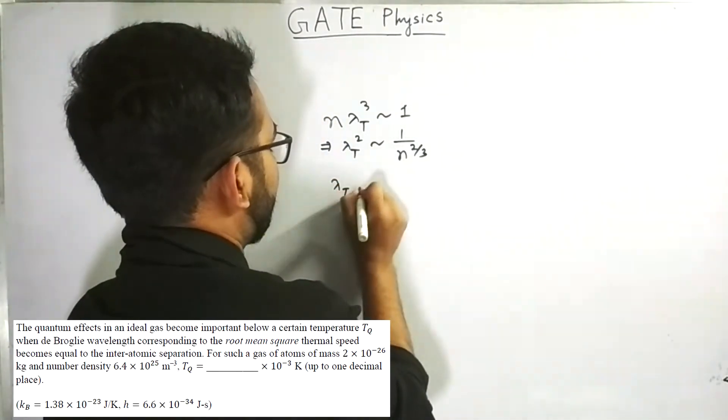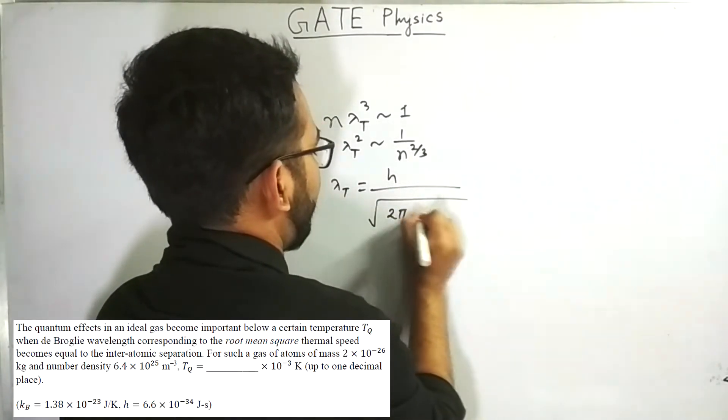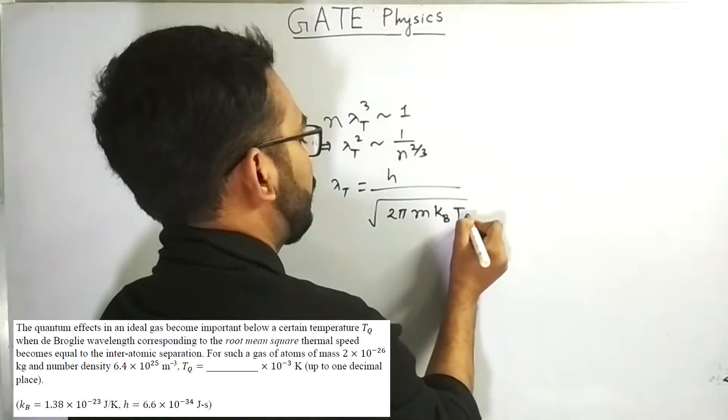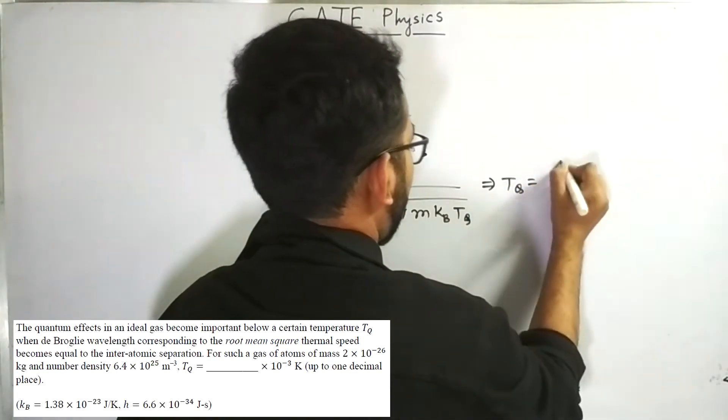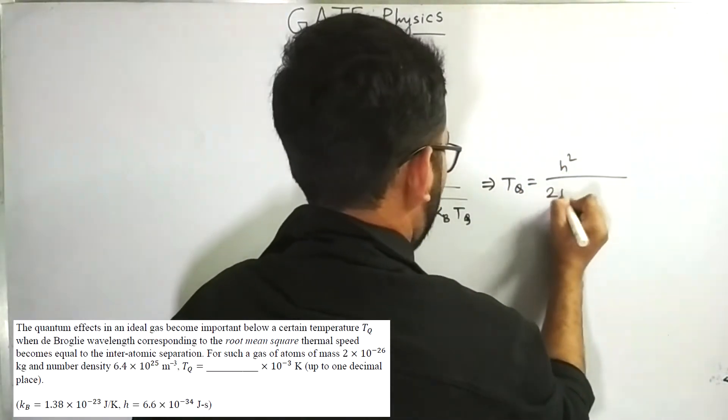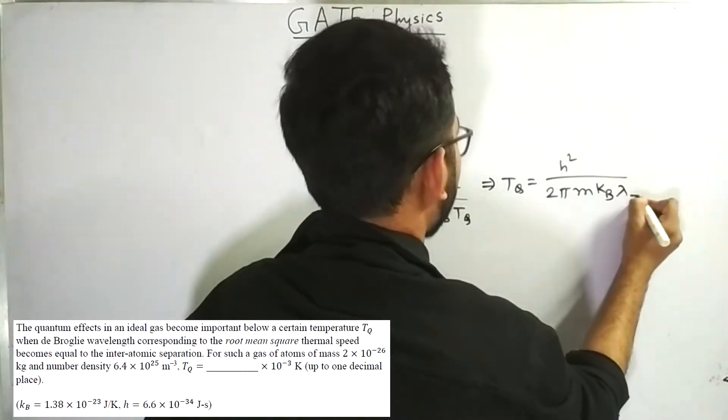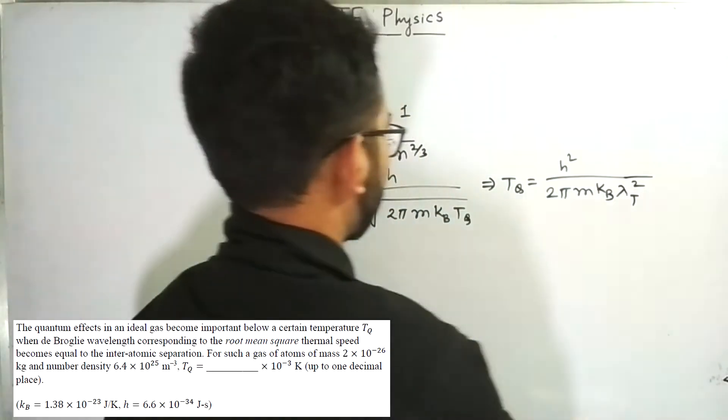Now, we know that lambda t means thermal wavelength equals to h by root of 2 pi m kb T. We have to calculate this T. Therefore, T equals to h squared by 2 pi m kb lambda t squared.